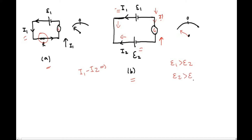If E2 is greater than E1, then current I2 will flow through the galvanometer because the resultant current will be I2 minus I1. So the net result will be the current I2 — basically I2 minus I1 current will pass through this galvanometer, and the galvanometer will show deflection in the other direction.